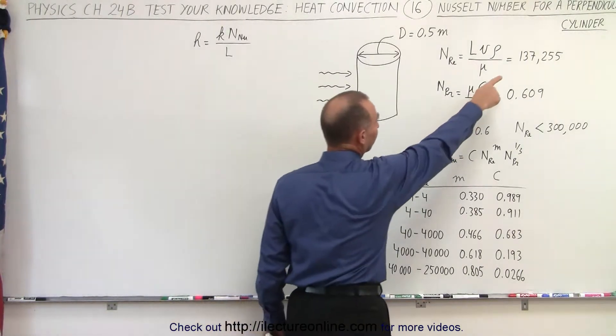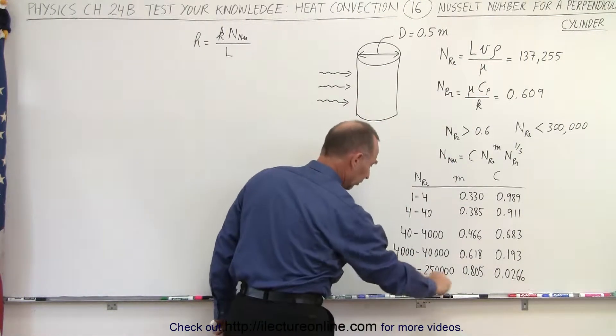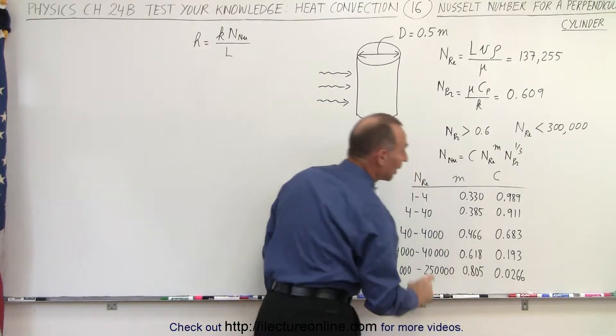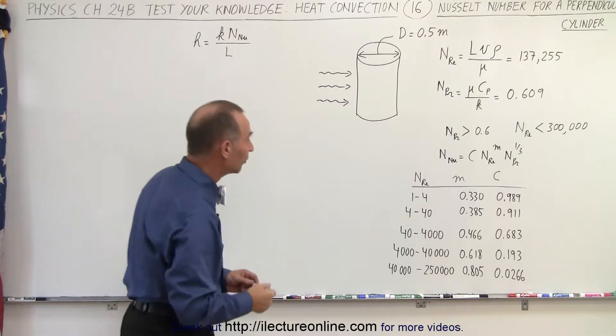But notice we fall in the category where the Reynolds number is somewhere between 40,000 and 250,000, so we get these two values for the exponent and for the constant.